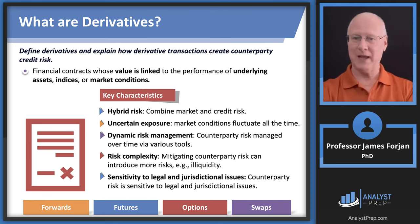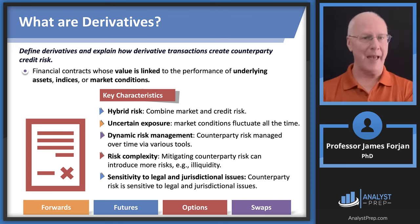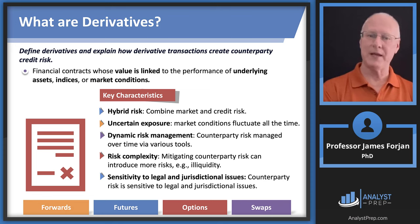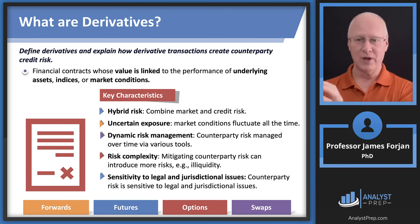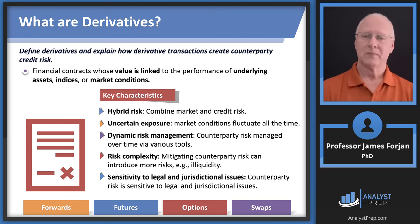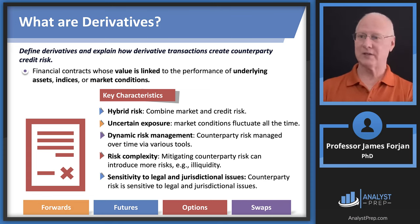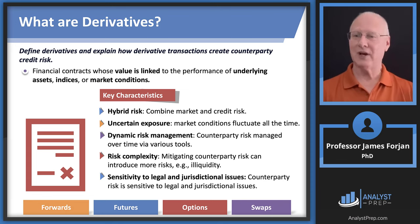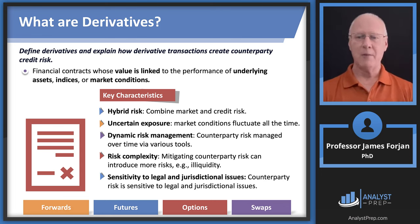Then we need to worry about counterparty risk. What Betty and I could have done is gone to a bank and asked them to step in and take both sides of the transaction — that bank would pose as the counterparty risk entity. If Betty decided not to pay me, I could get the value from the bank. But that counterparty risk depends on the quality of the bank. You see how these things are all interrelated.